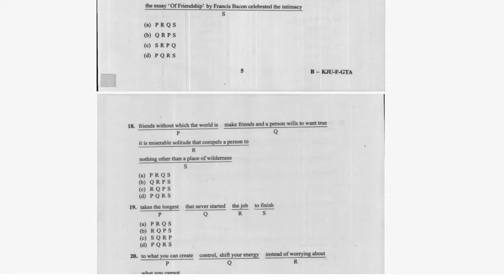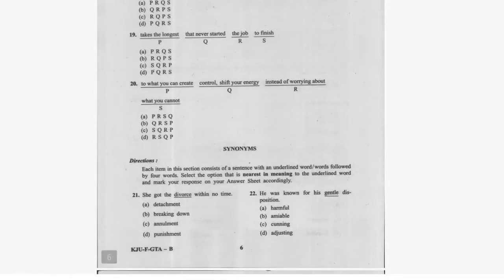Question fifteen: option A is correct. Question sixteen: option D is correct — S, P, R, Q. Question seventeen: option D, that is C. Questions 18 and 19: the answer is C, and question 20 is D. You can just match all of these.